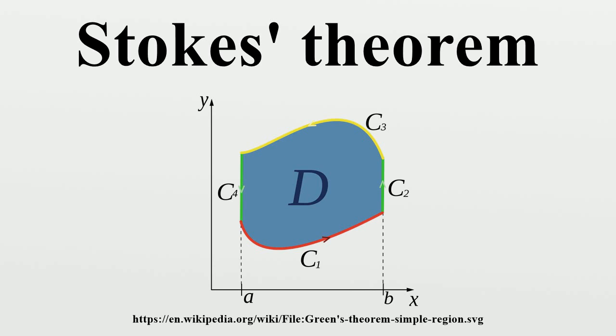Kelvin-Stokes' theorem: This is a 1+1 dimensional case, for a 1-form. This special case is often just referred to as Stokes' theorem in many introductory university vector calculus courses and is used in physics and engineering.